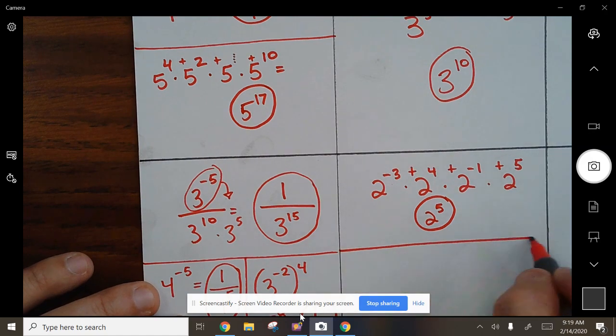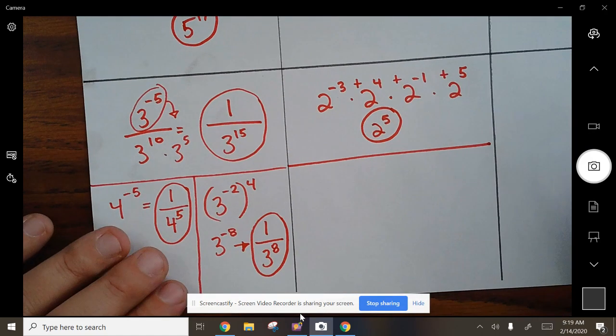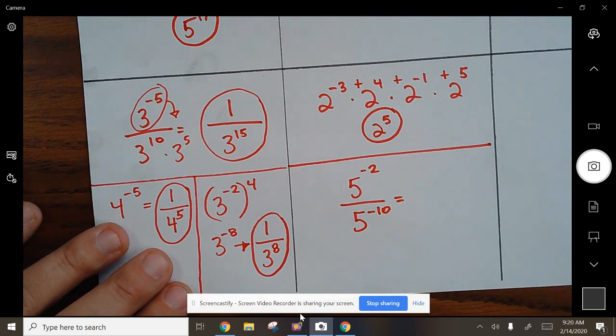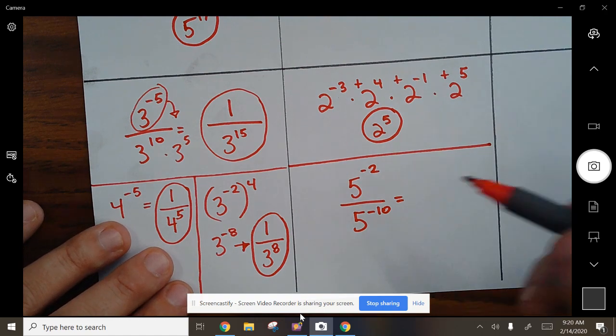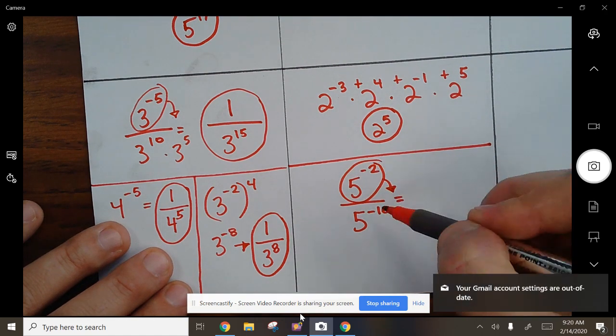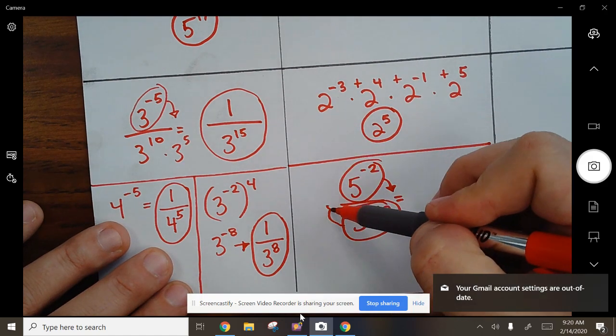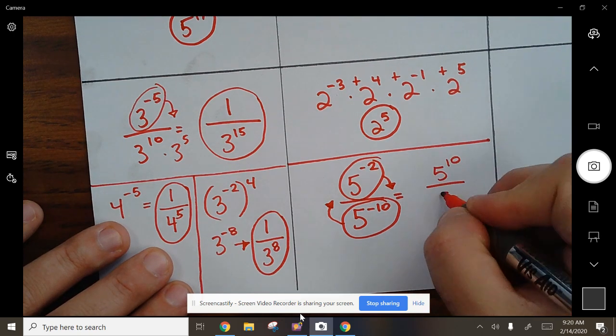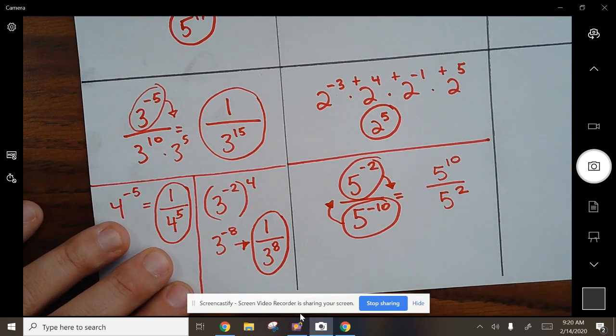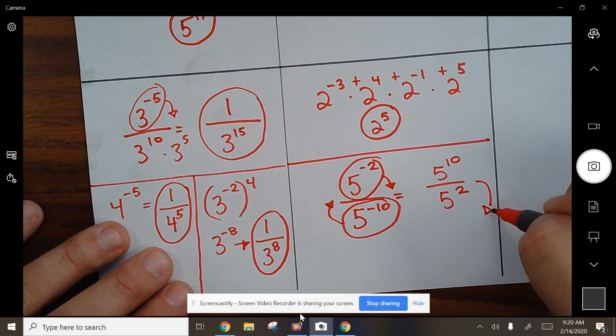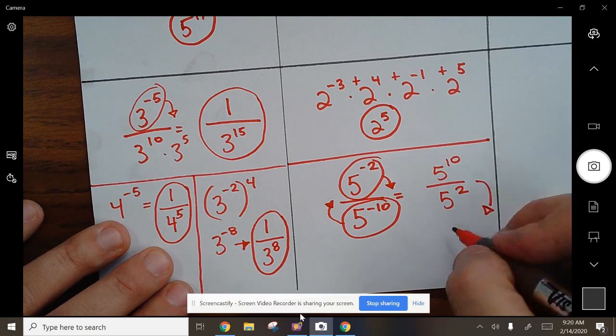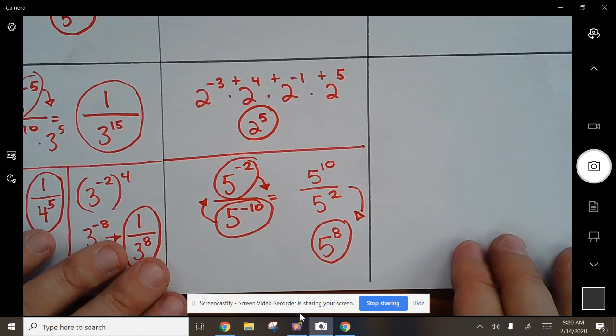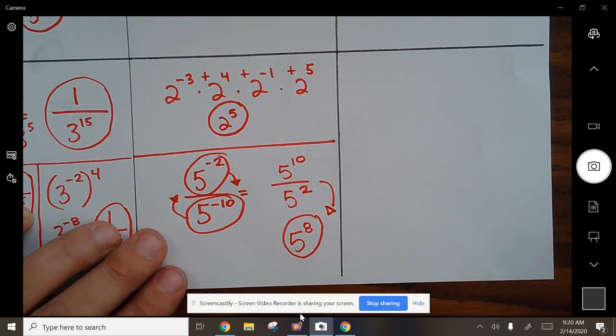On the bottom here, this one is a curveball. Make sure you write this down. You can use this on your quiz. 5 to the negative 2nd over 5 to the negative 10th. What happens here? This one flips down, this one flips up, so eventually you get 5 to the positive 10th on top, 5 to the positive 2nd on the bottom. If they battle, 10 on top, 2 on the bottom, you get 5 to the positive 8th.